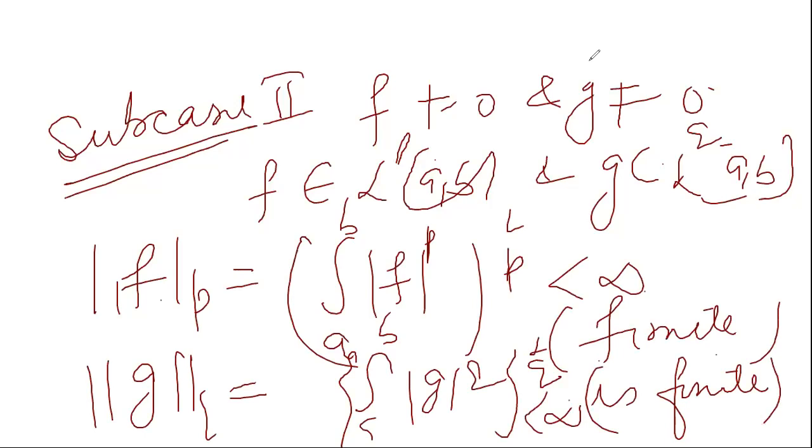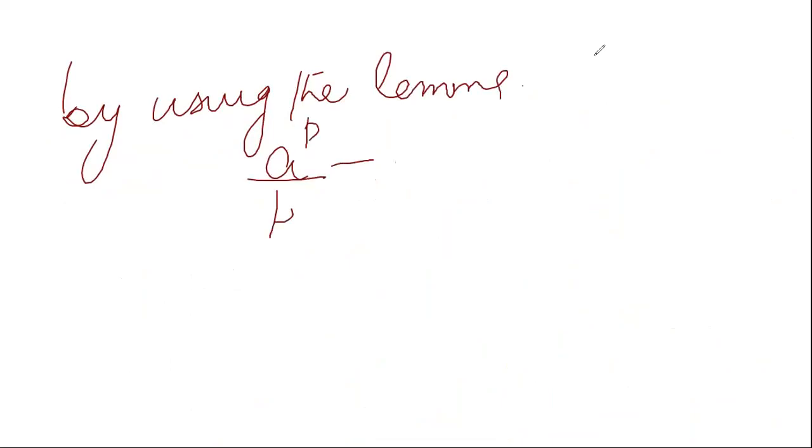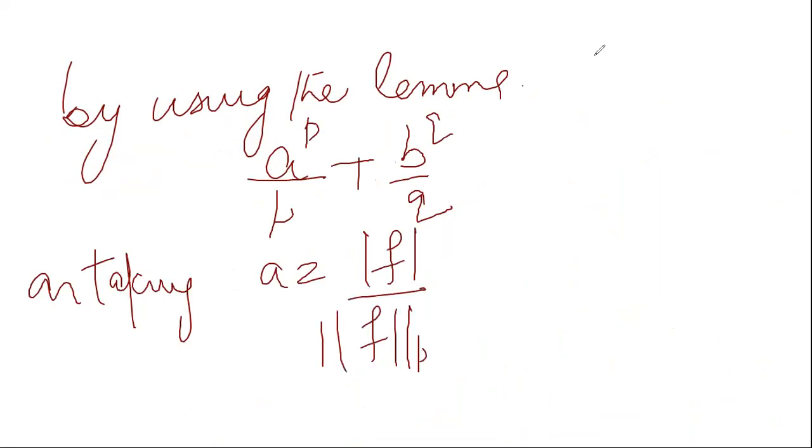Now, if we want to use a raised to power p, we will use a lemma here. By using a lemma: a raised to power p upon p plus b raised to power q upon q. On taking A equals mod of F upon norm of Fp and B equals mod of G upon norm of Gq.